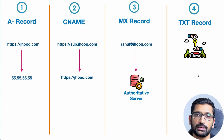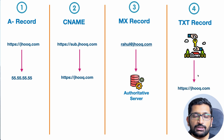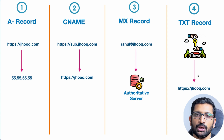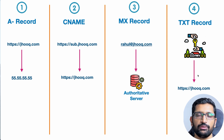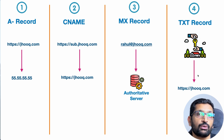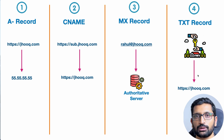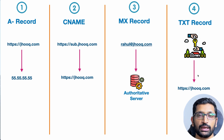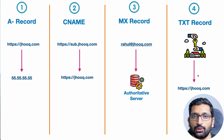Finally, there is the TXT record, which is generally used for defining or verifying the authority of a particular domain. For example, for jhook.com — if someone tries to verify the authenticity that I own that domain, that service provider will give me a TXT record which I need to insert into my domain name settings so that they can verify I own that particular domain. That's what the TXT record is used for.